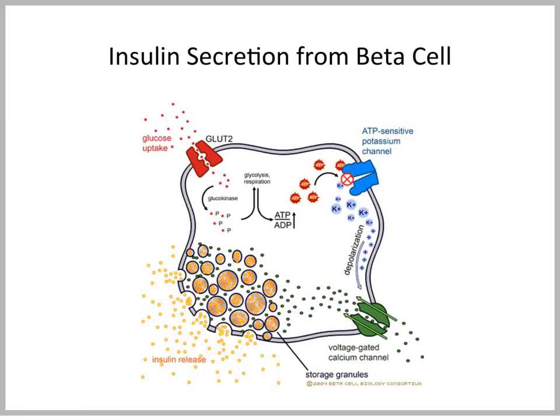This change in voltage leads to an opening of so-called voltage-dependent or voltage-gated calcium channels. Calcium comes into the beta cell, and the calcium is needed to push the secretory granules, which contain insulin, to the plasma membrane. They fuse with the plasma membrane, and the content of the secretory granule is then released into the blood.